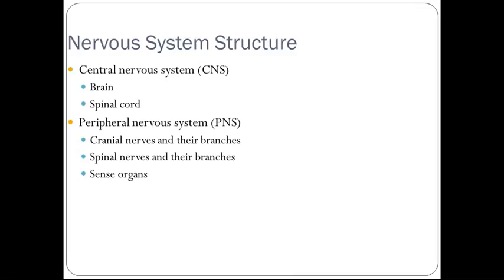The nervous system structure. We have the central nervous system, also abbreviated as CNS, which consists of the brain and the spinal cord. We also have the peripheral nervous system, abbreviated as PNS, which consists of the cranial nerves and their branches and the spinal nerves and their branches, and also consists of sense organs.